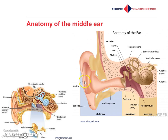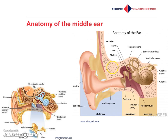To repeat it, have a look at the other picture. You'll find the outer ear, which is built up by the auricle and the auditory canal. Then you see the eardrum, also called the tympanic membrane, which is the boundary between the outer and middle ear. Here you see the middle ear, where three important structures are inside.